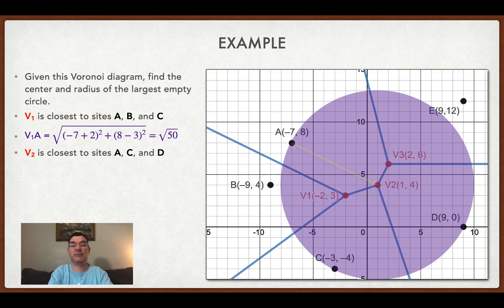So the distance from vertex 2 to any one of those sites. And again, I randomly chose A. That's going to be the square root of 80. Again, using the distance formula to find that.